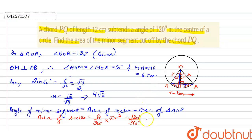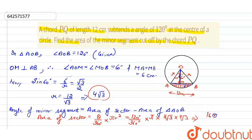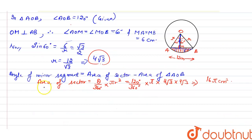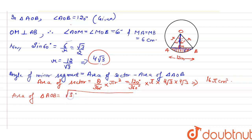Substituting, area of sector equals (120/360) × π × (4√3)², which equals (1/3) × π × 48 equals 16π cm².